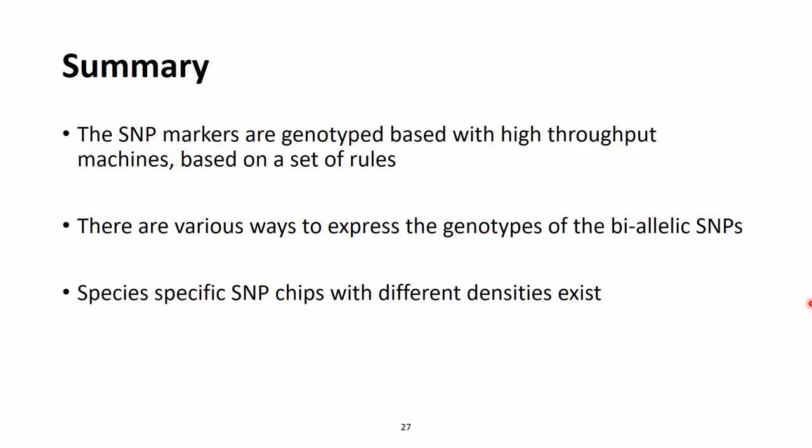To wrap up: we talked about SNP markers being genotyped with high-throughput machines that determine genotypes in a cost-efficient manner. The output is large text files that can be further analyzed. These files express biallelic SNP genotypes in various coding formats — nucleotide or numeric — and missing data is denoted in various ways. Overall, SNP chips are a very standard way to handle genotype data across populations, and SNP chips with different densities exist for many species. Thank you for your time, and I look forward to seeing you at the next lecture.